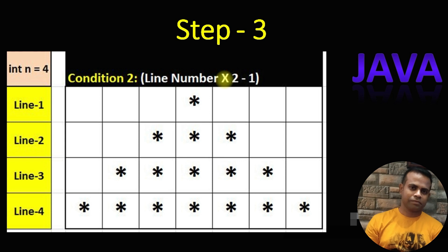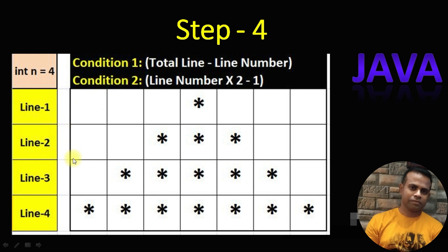We are going to use two inside loops — two for loops inside the main loop. In step four, you can see that each line also needs some spaces. In line one the stars print after three spaces, in line two after two spaces, in line three after one space, and in line four no space. To find the clue for spaces, we use condition one.